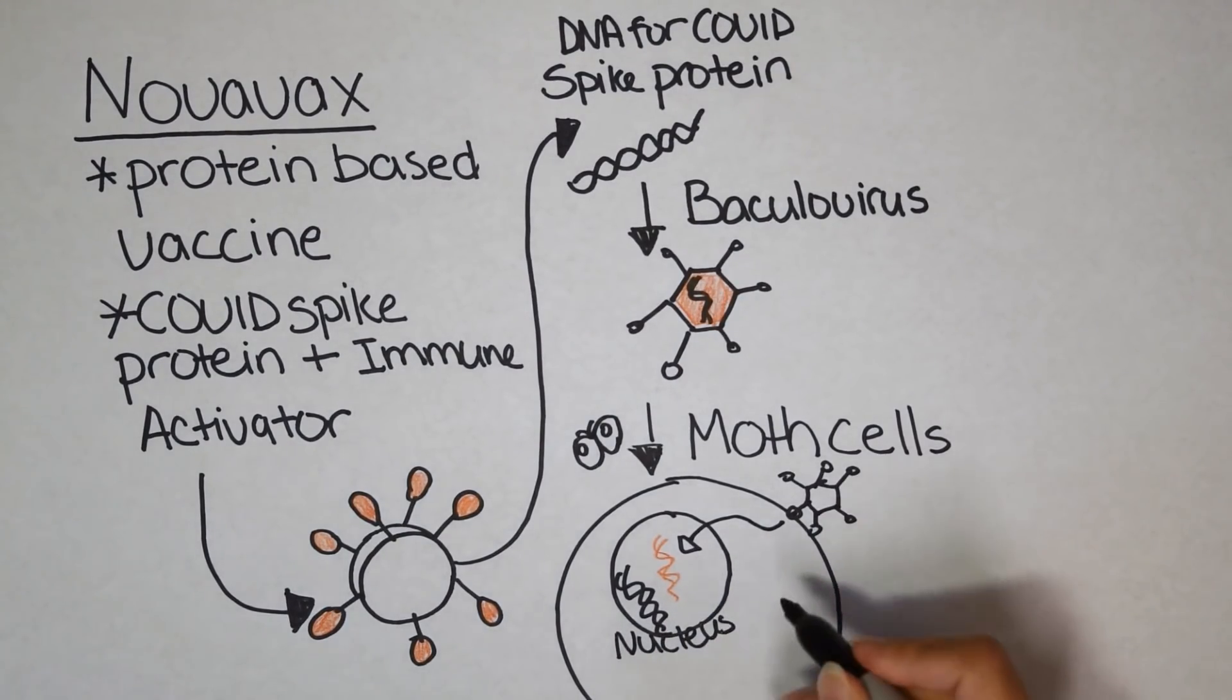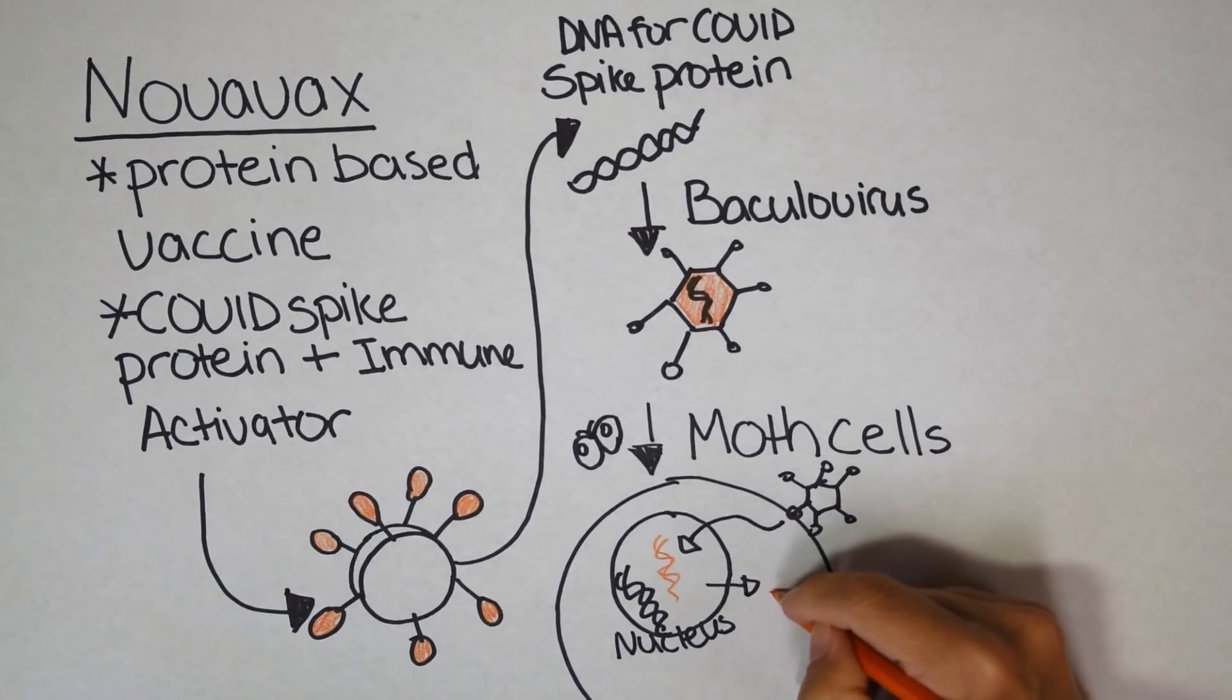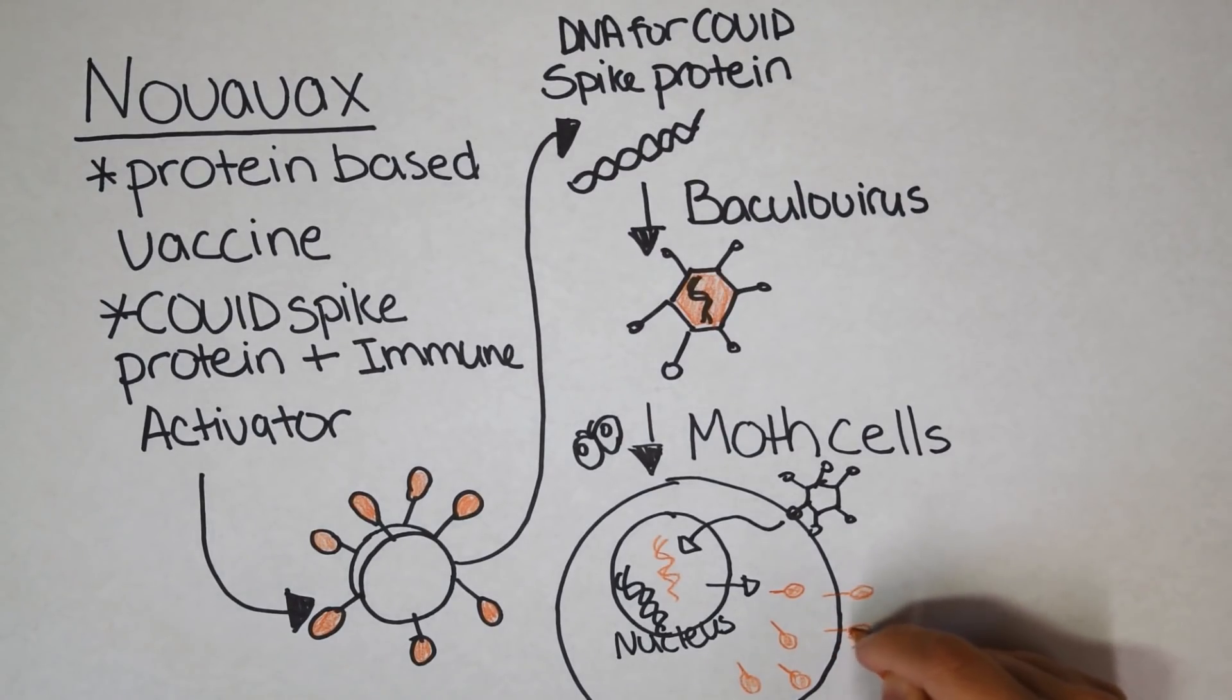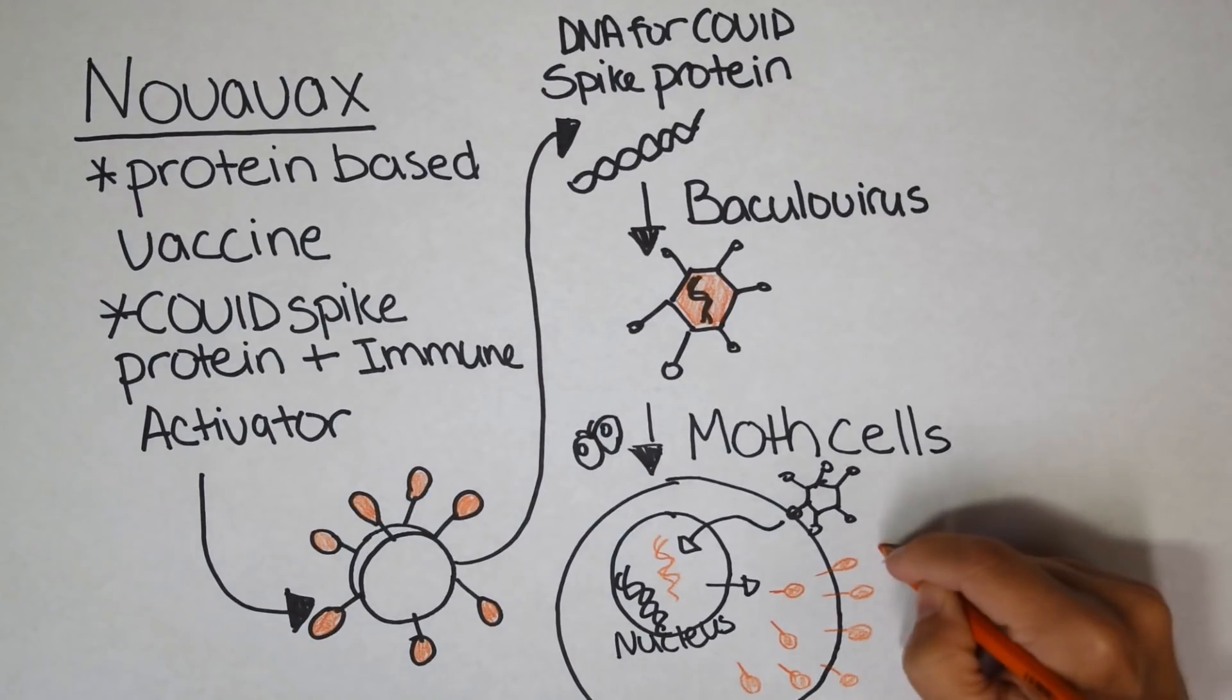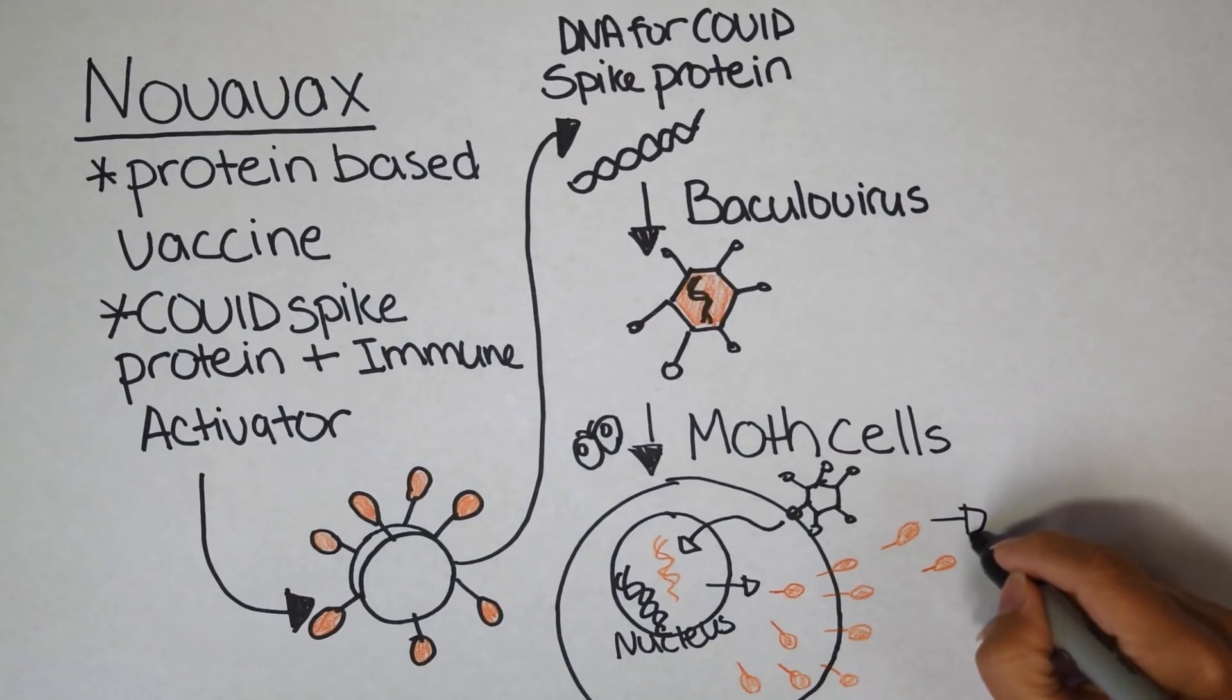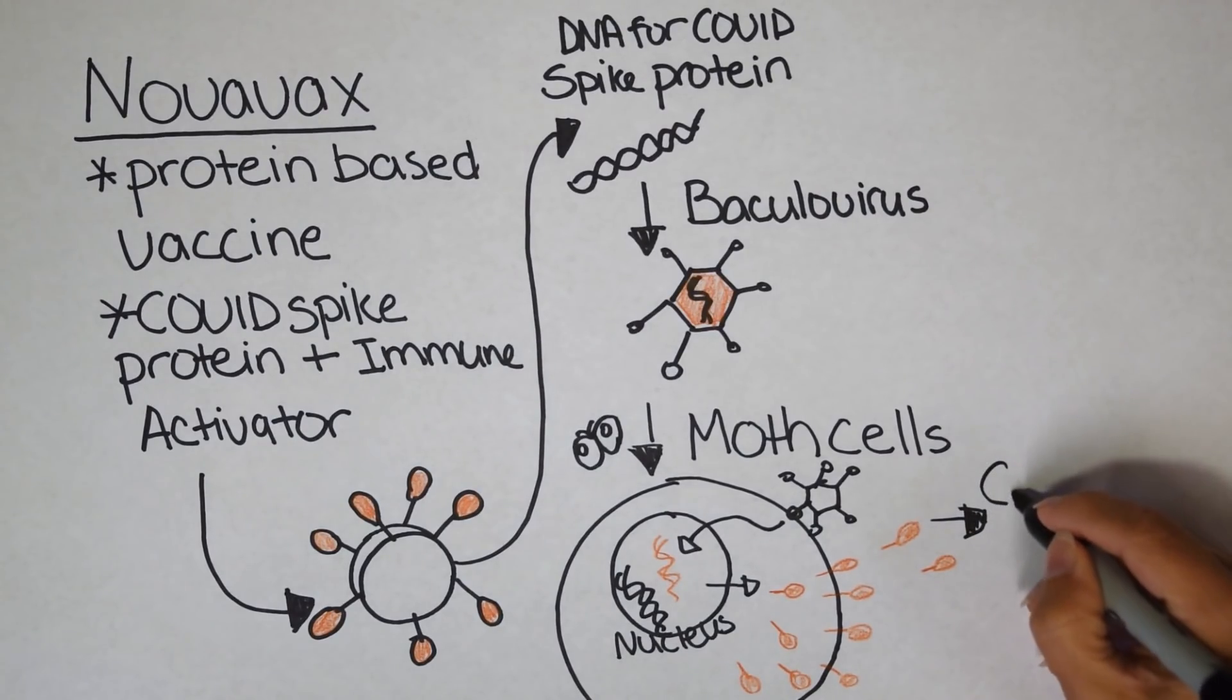They're going to start cranking out those COVID spike proteins for the researchers. All right, so again, the baculovirus gets into the moth cell, takes the DNA into the nucleus. The moth cells make thousands upon thousands of copies of the COVID spike proteins. They are then collected by the researchers.